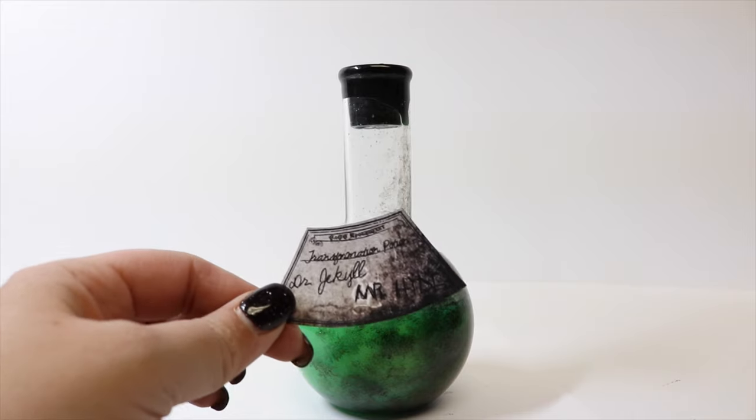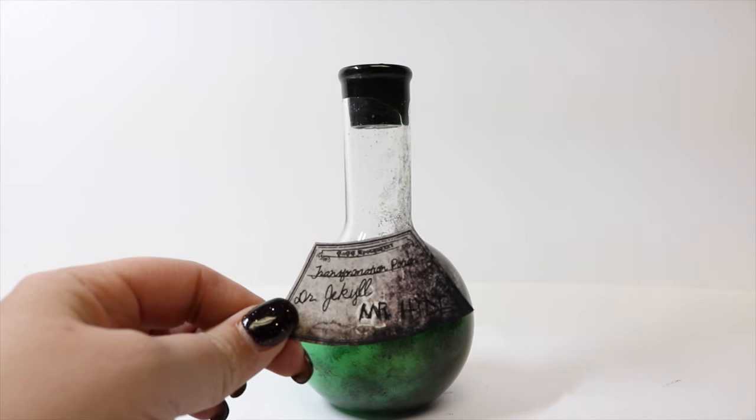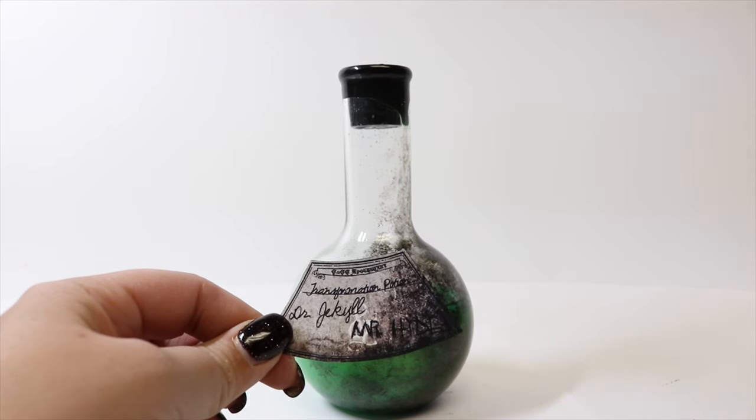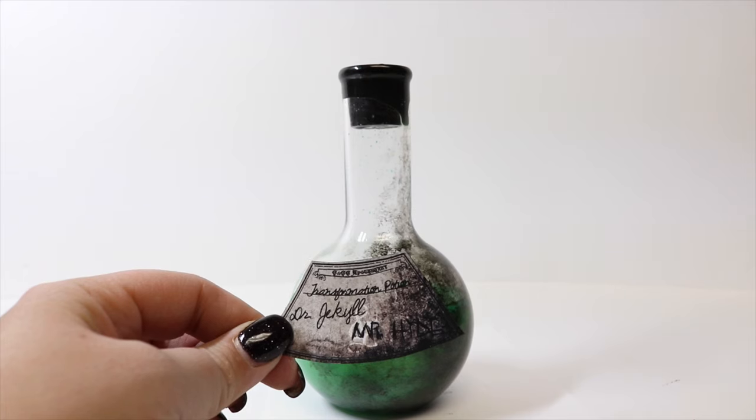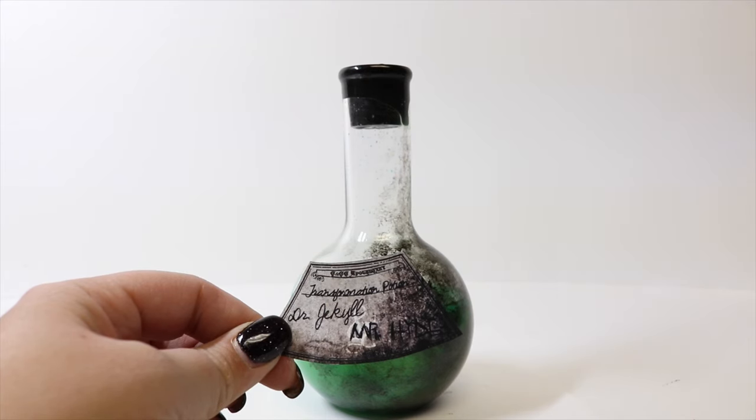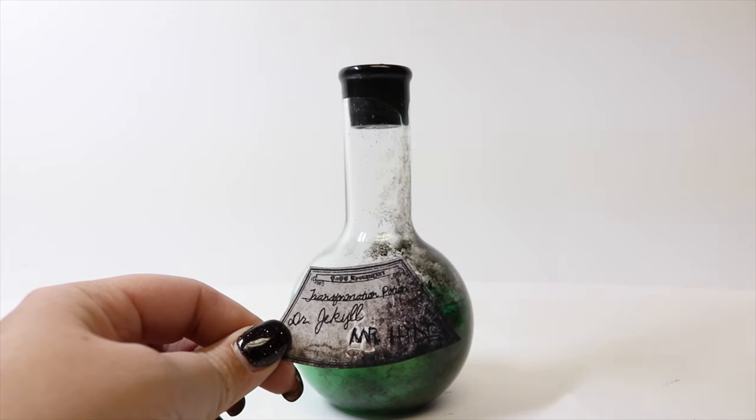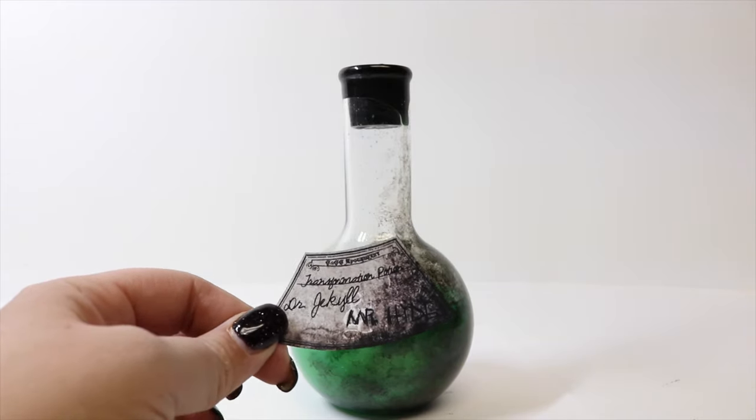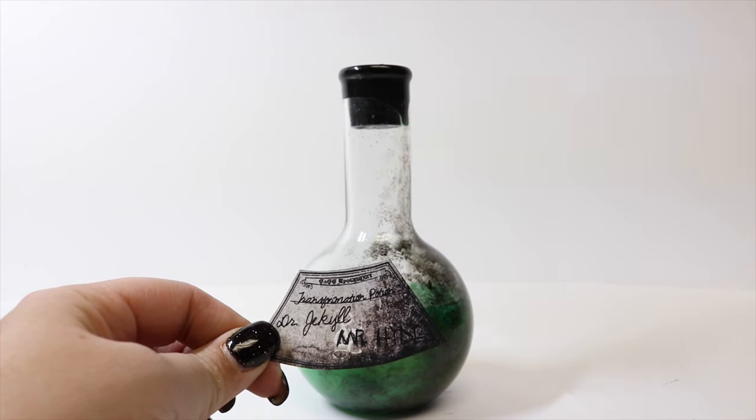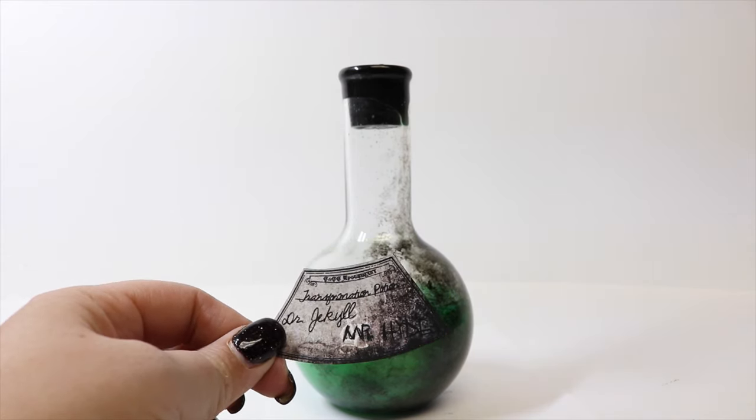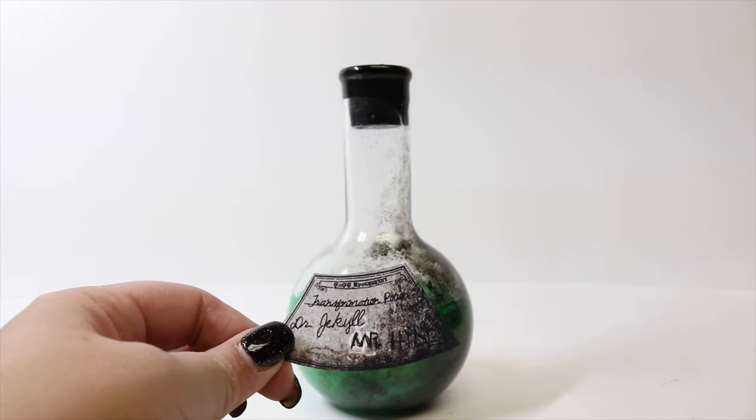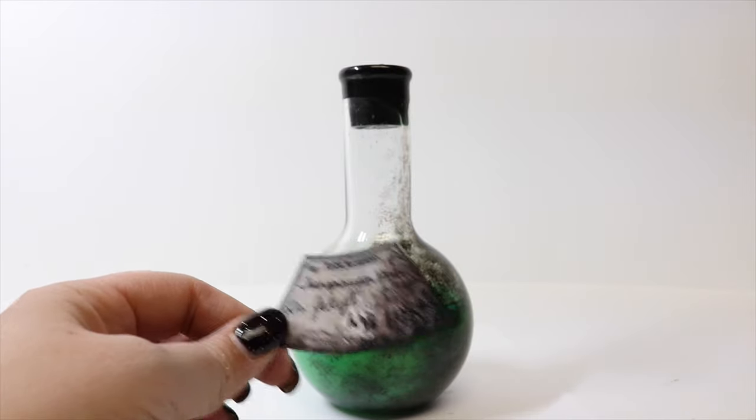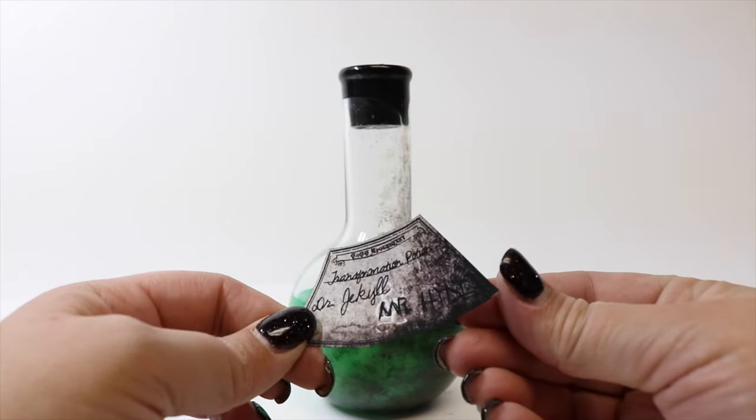Now that we have our potion in there and it's colored, we're going to take our label. I printed this one on printable vinyl versus sticker paper because the vinyl can somewhat stretch. You'll still get wrinkles like with the paper, but not as much, and on this round bottle it's going to be easier to work with. You can definitely still use sticker paper or mod podge - whatever you want to adhere your label will be fine. I just find you get fewer creases with vinyl on rounded bottles.